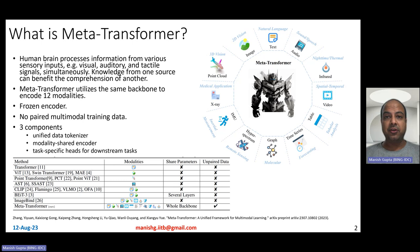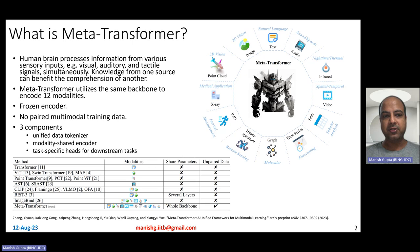The human brain processes information from multiple sensory inputs together — for example, visual input, auditory input, and tactile signals. When processing those signals, knowledge from one source can benefit the comprehension of another. So can our deep learning models also do the same? And that is where Meta Transformer comes in.